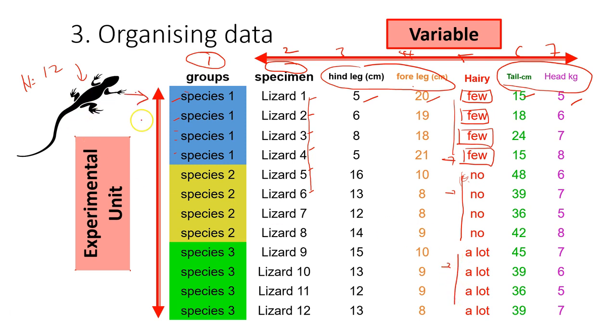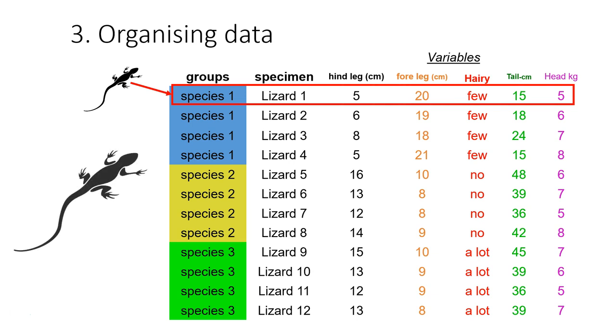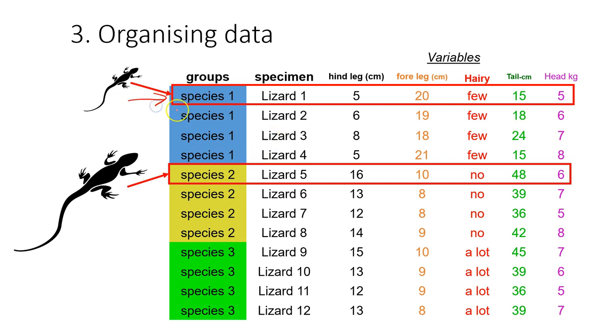For each of these rows, we have the experimental unit. Each experimental unit is each of these lizards, and for each lizard we measure different variables. As you can see, there is no gap in the dataset - each of these rows is an experimental unit.